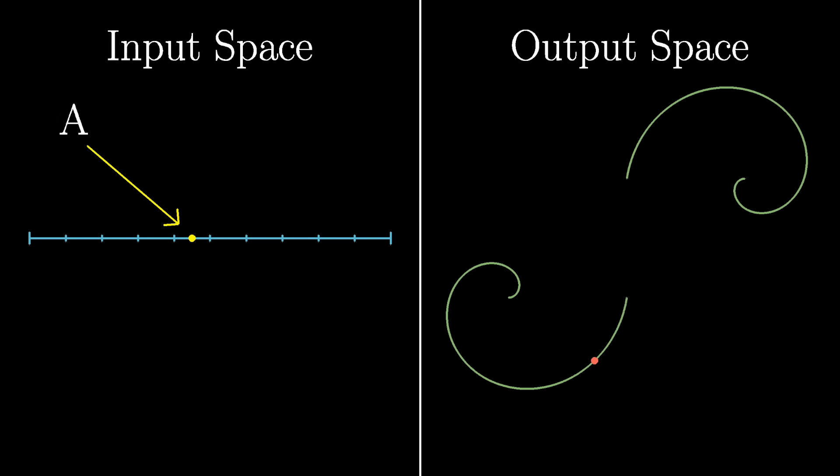Consider a particular input point, A, and the corresponding output of the function, B. Draw a circle centered around A, and look at all of the other input points inside that circle, and then consider where the function takes all of those points in the output space. Now draw the smallest circle that you can, centered at B, that contains those outputs. Different choices for the size of the input circle might result in larger or smaller circles in the output space.